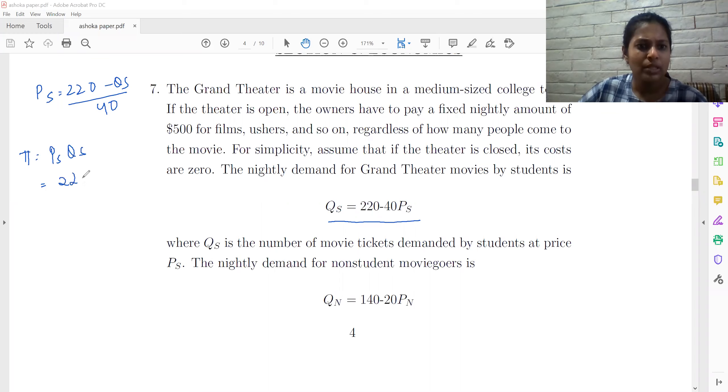And D pi by D QS, putting that equal to zero.